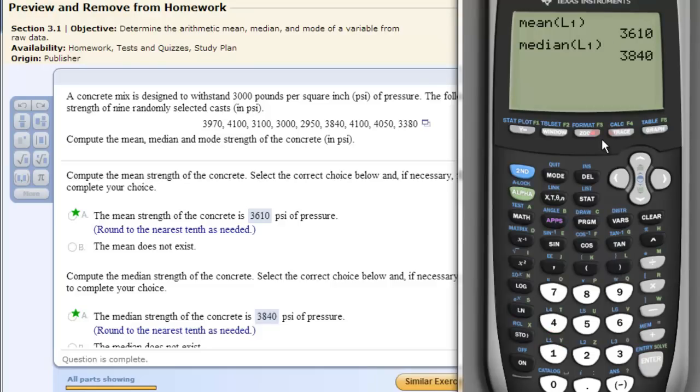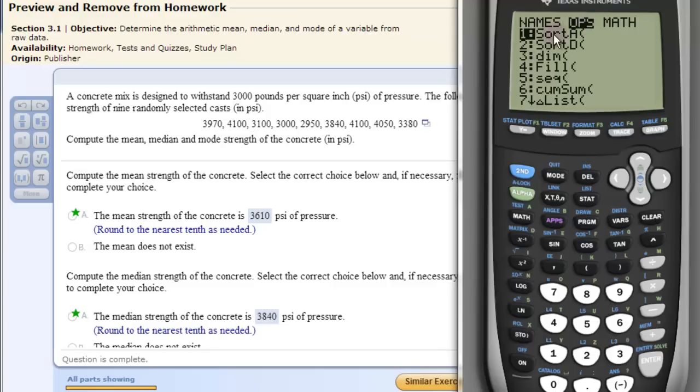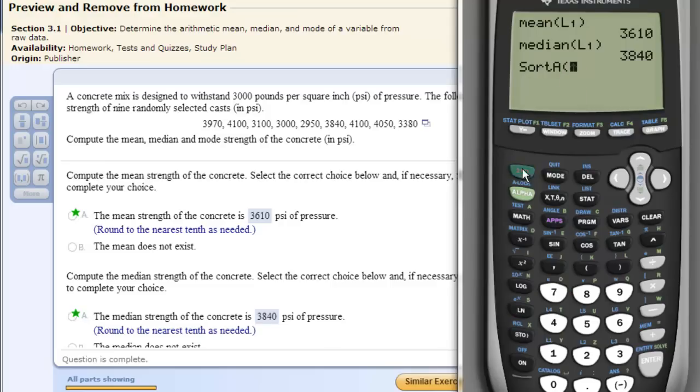And now the mode is a little tricky. It doesn't have a function for mode, but what we can do is this: in the edit area, this is our list, we can order this information. So if we go again, second list, and we go to OPS, we can sort A. Sort A means in alphabetical order. We do list one, and when we hit enter, it says done.